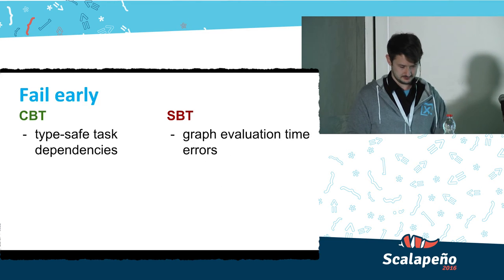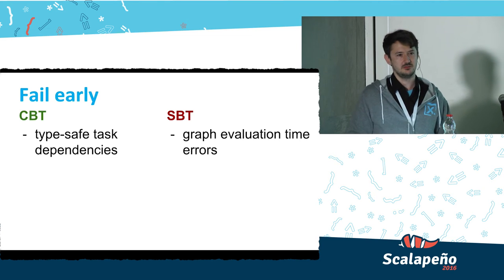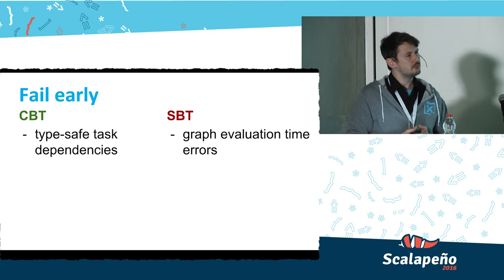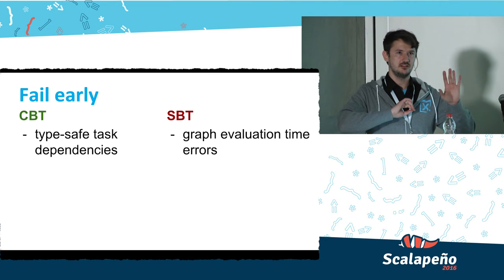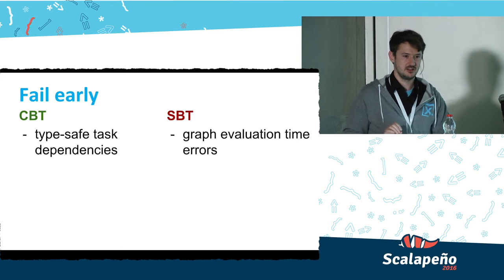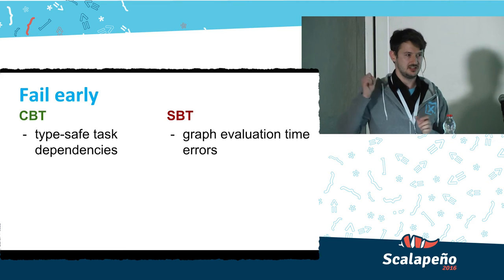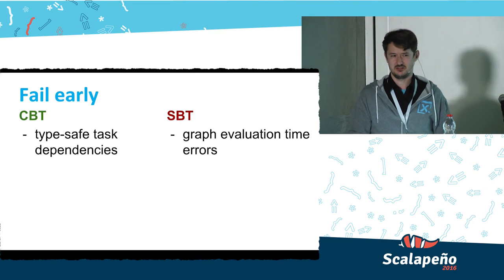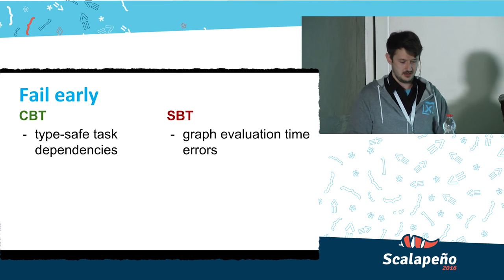Something I found annoying with SBT is tasks that depend on each other in different scopes — configurations — where you can reference a task in a scope that doesn't exist and get unintuitive error messages like 'there is no task test in your compile scope'. In CBT, everything is just methods, and it's very easy to discover with the tools and knowledge we already have.